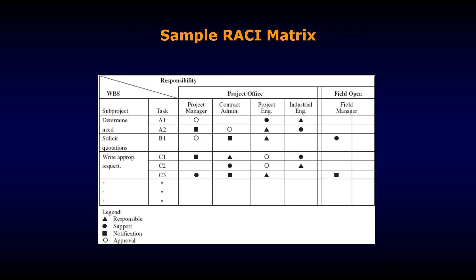This is a sample RACI Matrix. In the first column, you can see the Work Breakdown Structure (WBS). Here we have taken an example of undertaking a project where project activities are subdivided into three WBS activities: determining need, solicit quotations, and write appropriate. The second column is for tasks. These activities are further divided into tasks — for example, the first activity of determining need is divided into two tasks: Task A1 and Task A2.